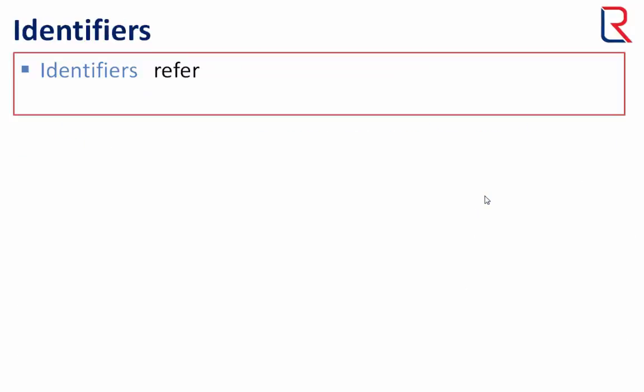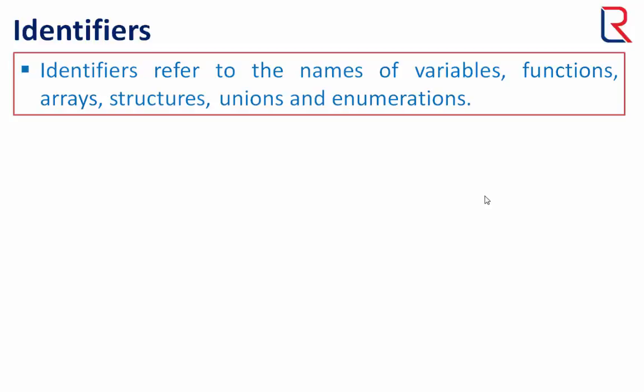Now let's move on to identifiers. Identifiers refer to the names of variables, functions, arrays, structures, unions and enumerations.